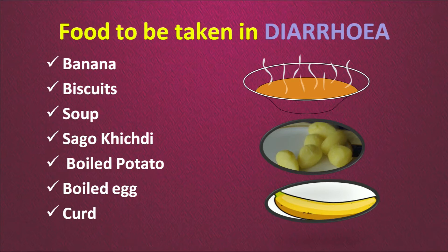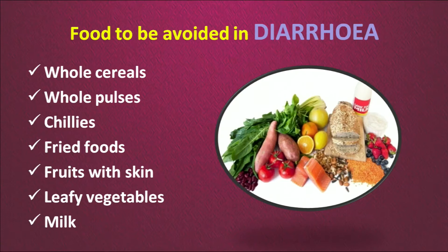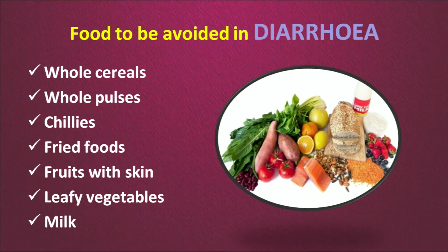Foods to be avoided in case of diarrhea are: whole cereals such as plain wheat chapati, whole pulses like rajma and black gram, chillies, fried foods, and whole fruits with skin. Banana should be eaten without skin, of course. Leafy vegetables and milk should also be avoided — curd is prescribed instead of milk during diarrhea.